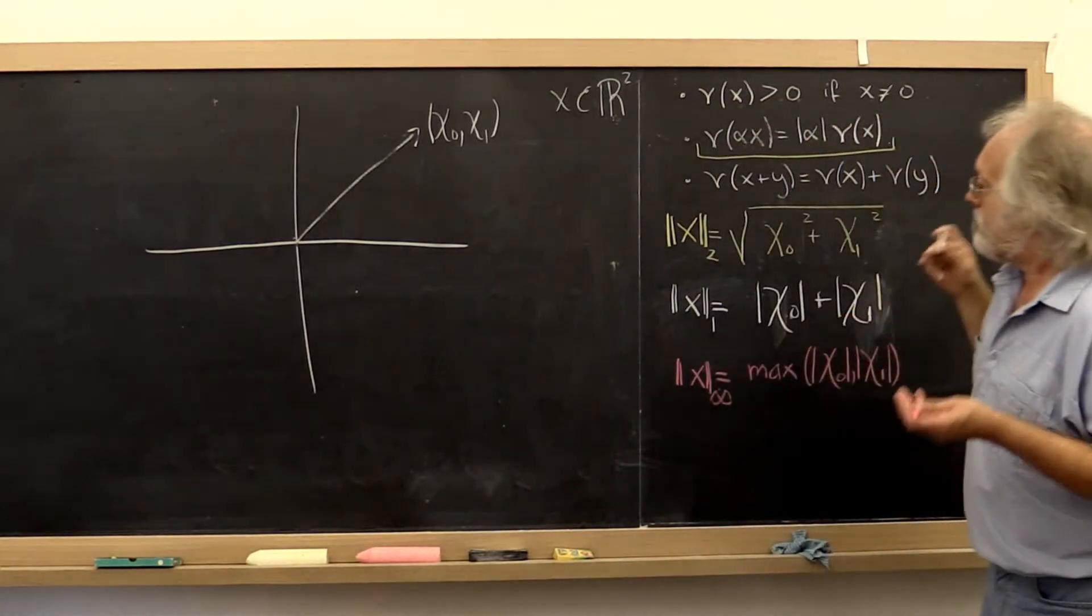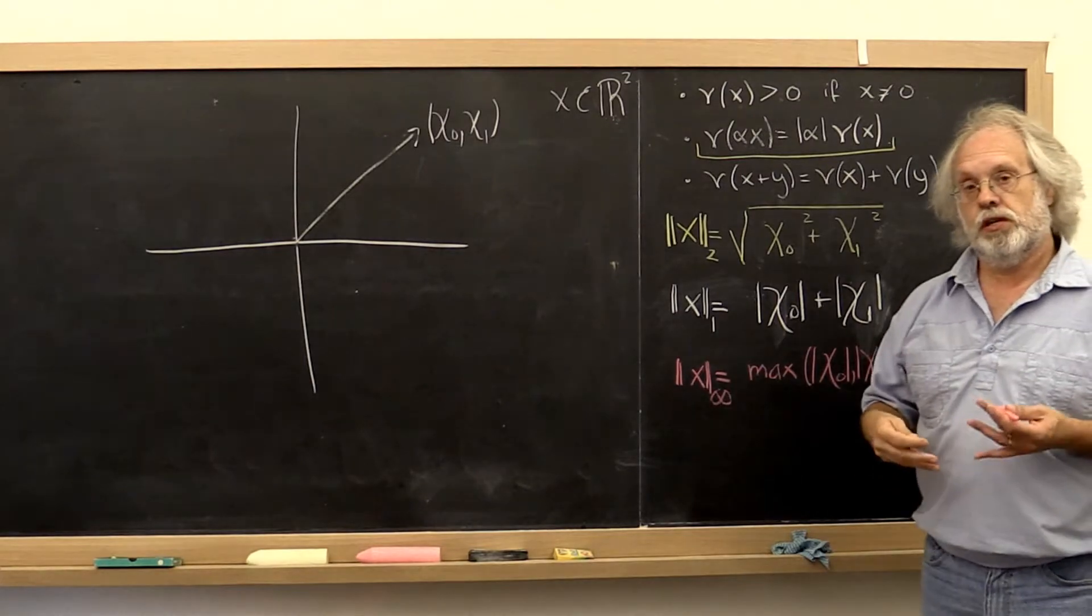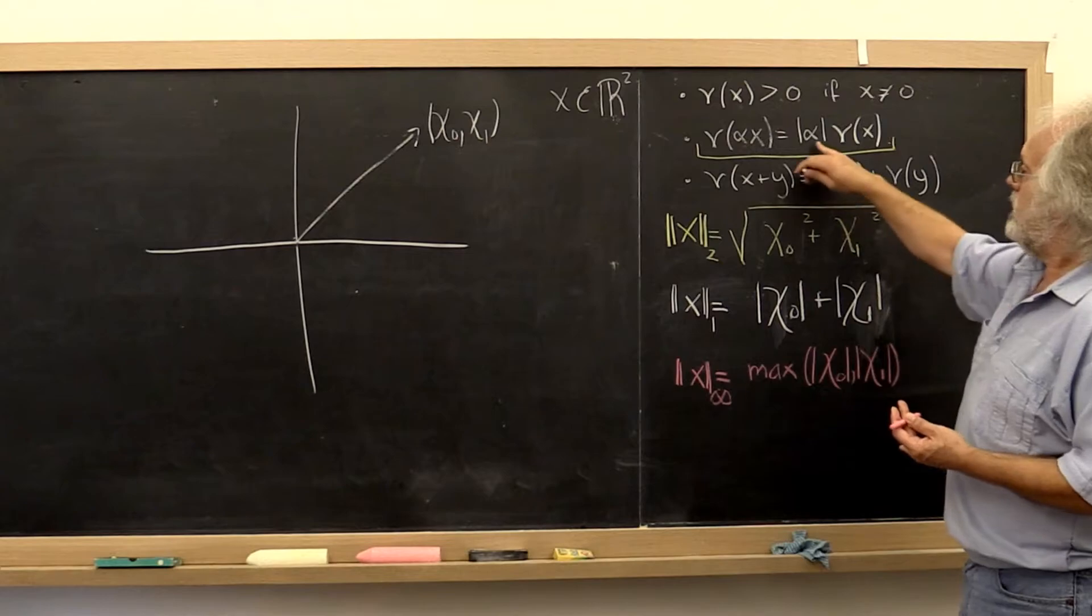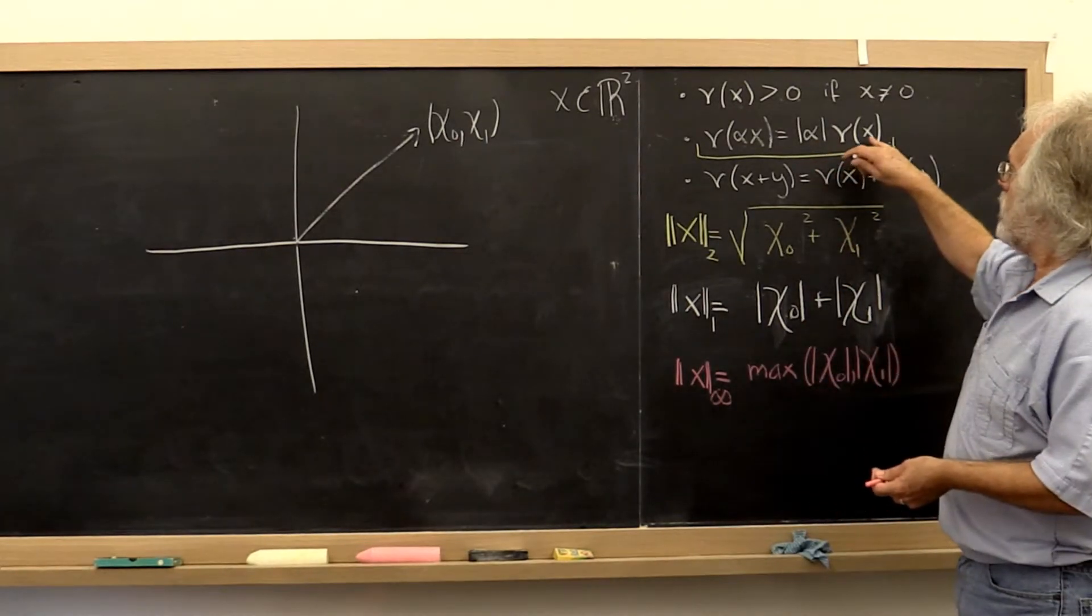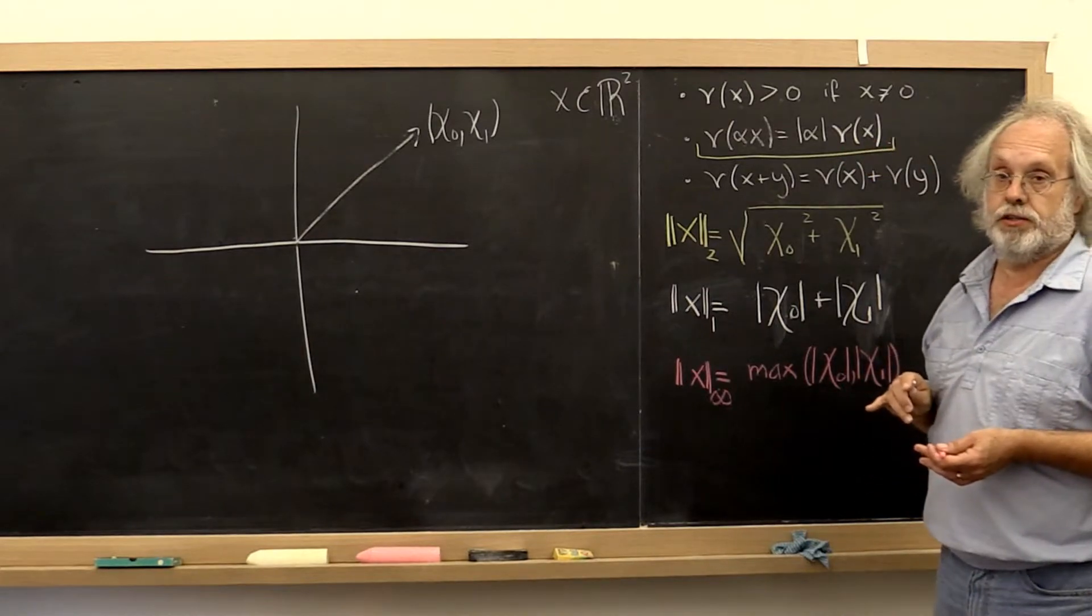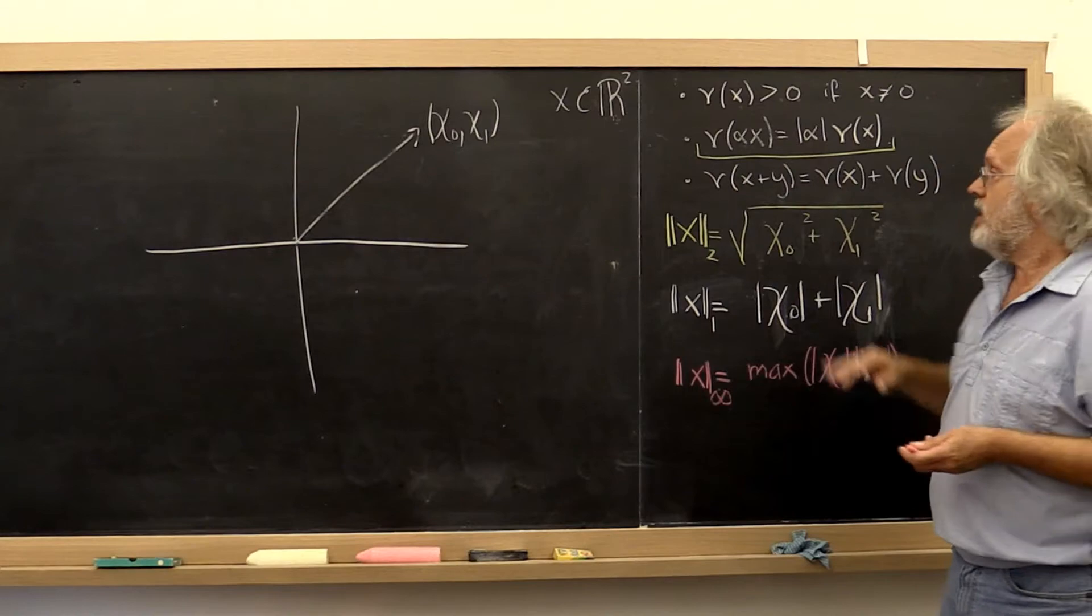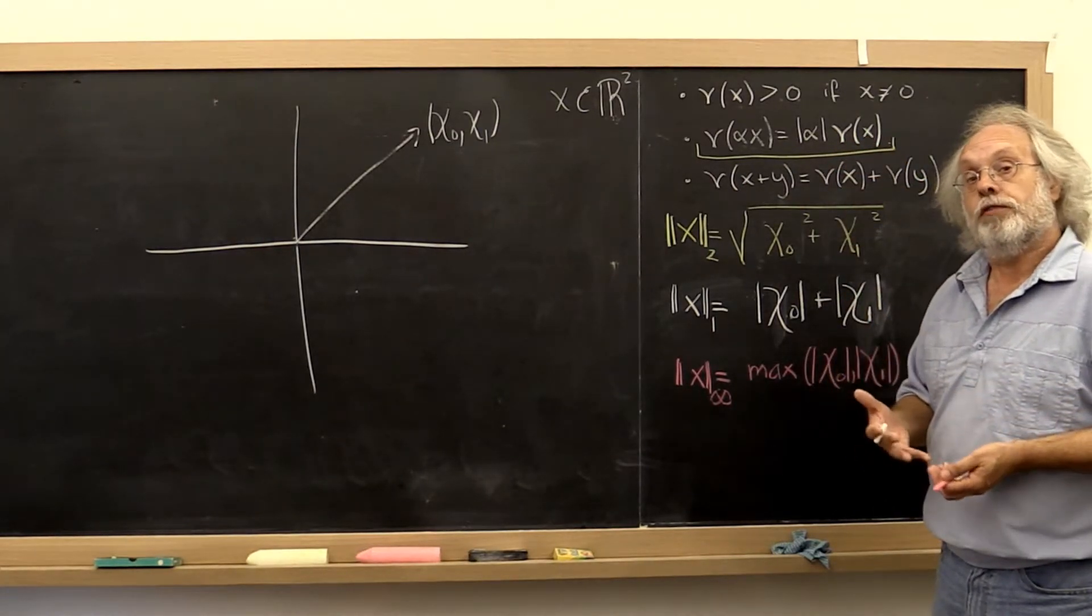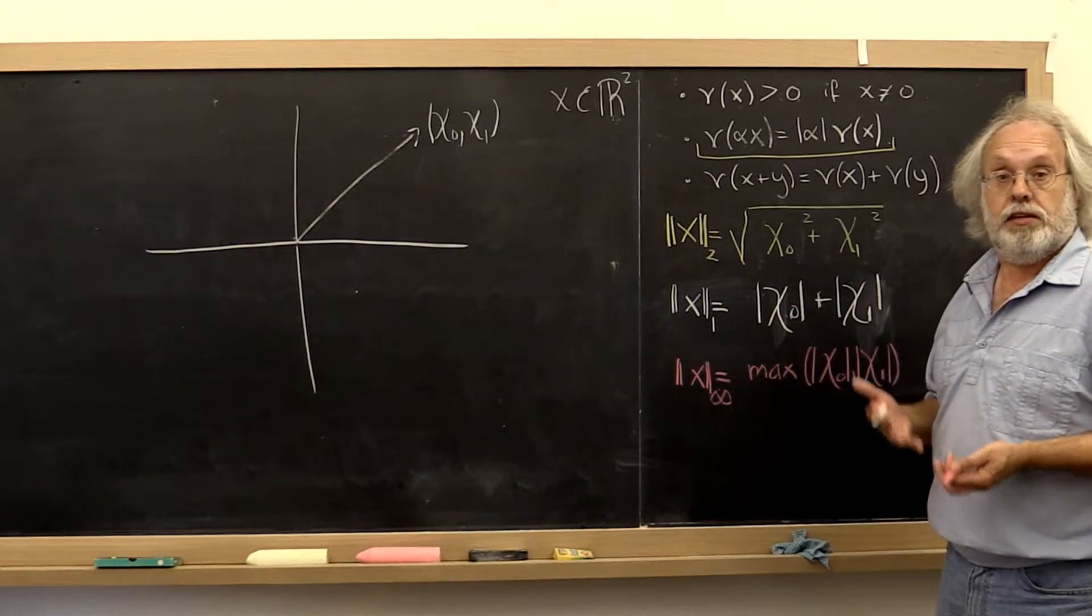Now this particular property of norms is going to play a very important role. And what it really says is that in a lot of cases we care more about the direction of the vector than we do about its length. And therefore it is important to pick a vector of convenient length. And what length is more convenient than length 1?